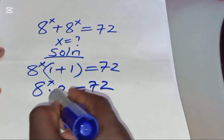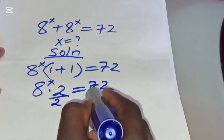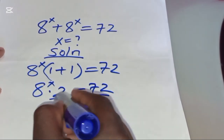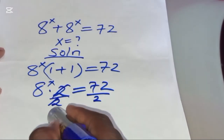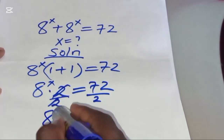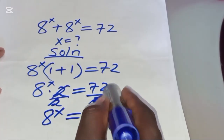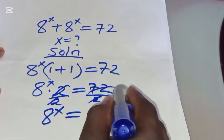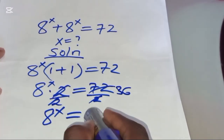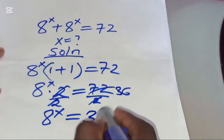So we divide both sides by 2, so that now we'll have 8 to the power x, and this is equal to 36.